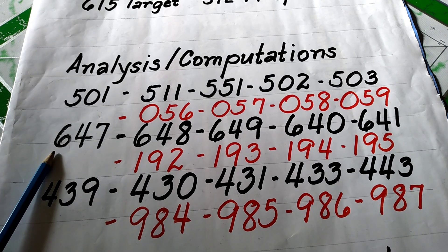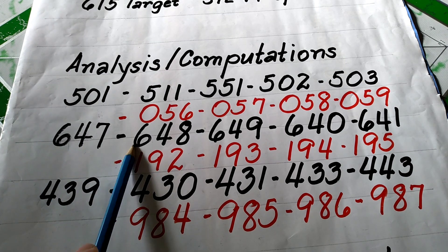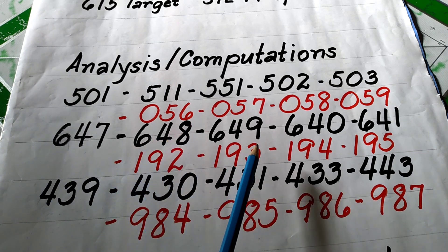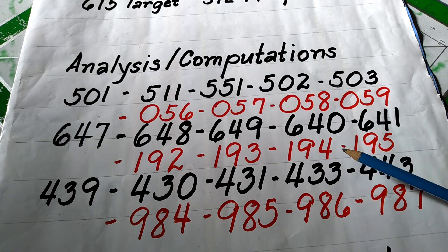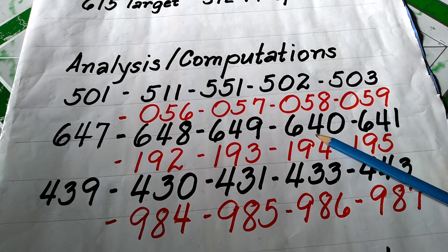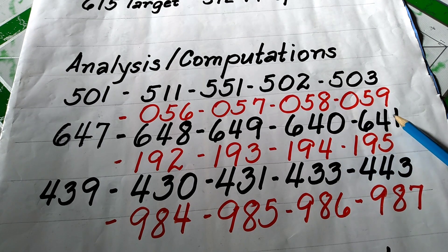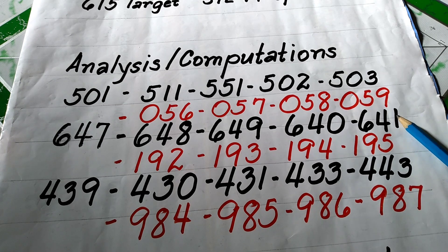Ito naman, 6-4-7, ang mga kasunod ay ito. So, maaring 6-4-8, 6-4-9, root number, 6-4-0 o di kaya slide combination, 6-4-1.